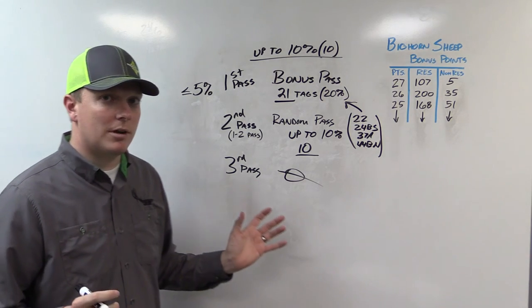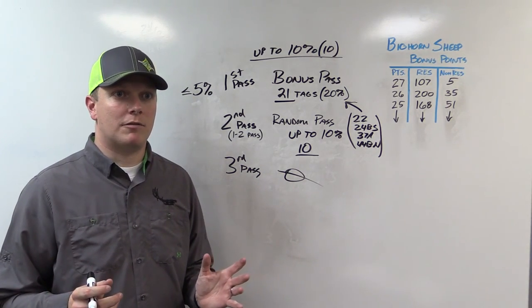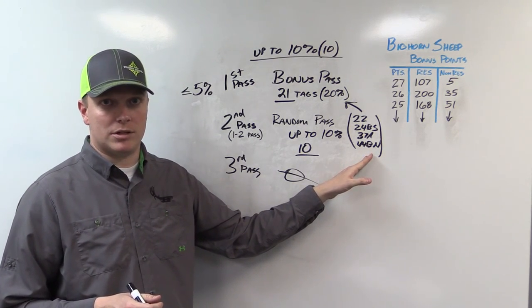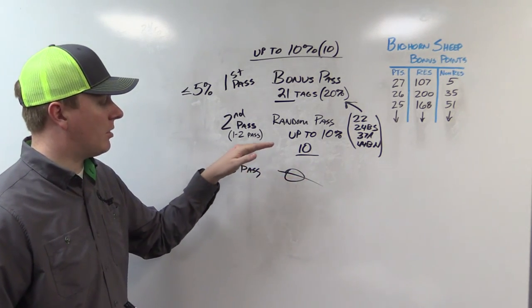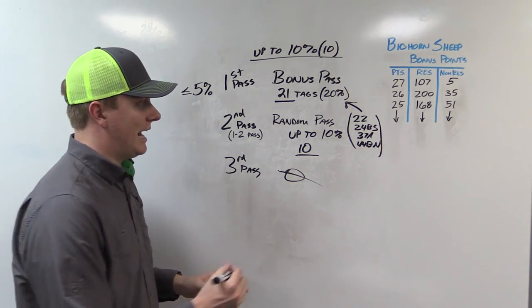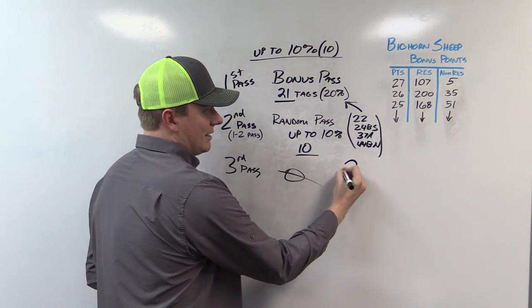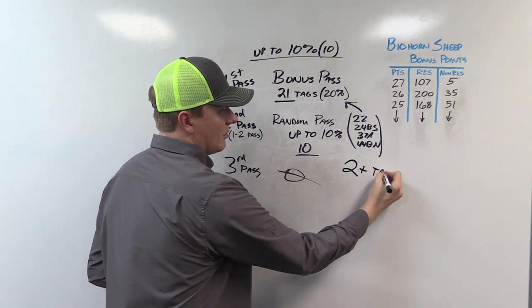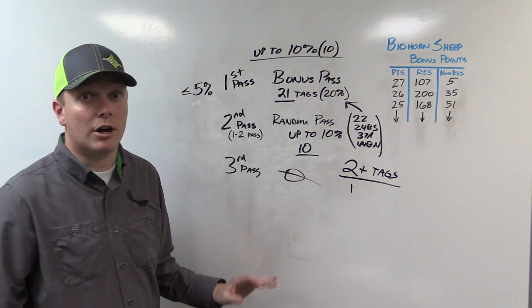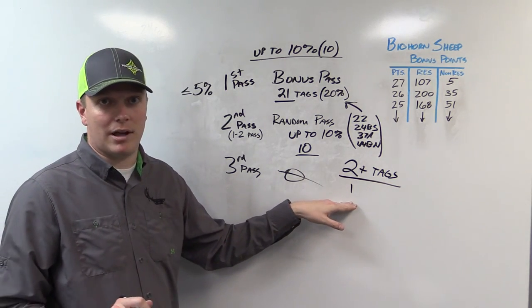So that's pretty much how this draw is going to work for sheep this year. Choose a unit that's not taken by maximum point holders usually, and apply for two choices, rocky or desert, looking at hunts that have at least two plus tags available. Units that only have one tag available you're out. Non-resident cannot apply for that.